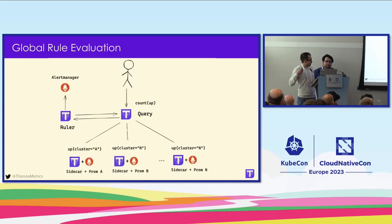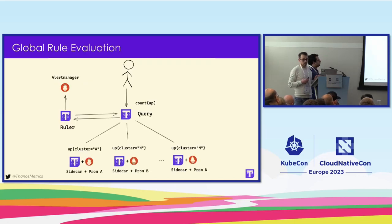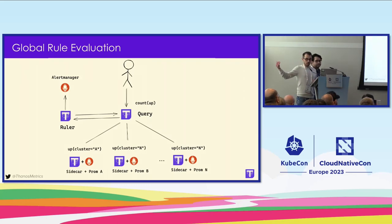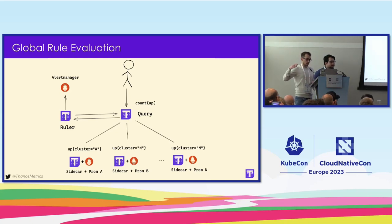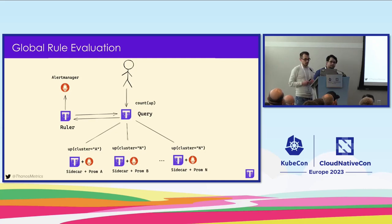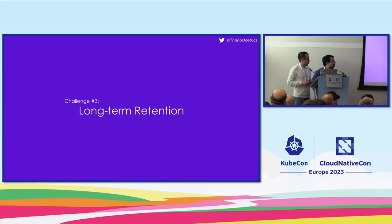Through the querier, the ruler has access to the entire dataset. So we can deploy a Thanos ruler, connect it to the querier, and because the querier has a global view over the whole dataset, the ruler by extension can execute alerting rules across the entire dataset.